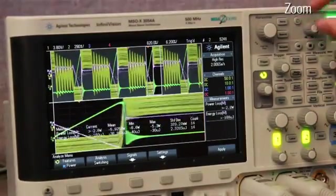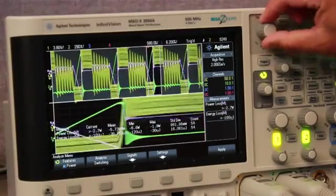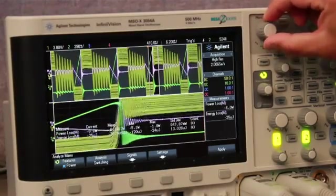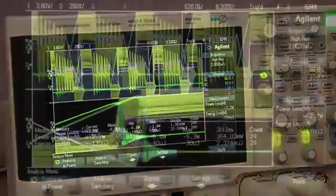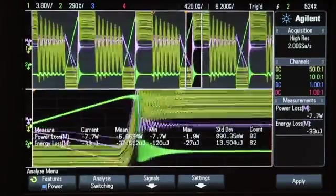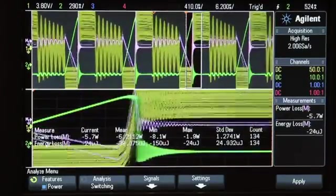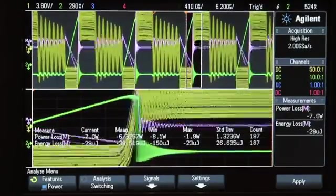Let's now turn on the zoom window and adjust the size and the position of the zoom-in window to encompass the turn-off transition in the Power Loss Trace. You can now pinpoint how much of the power is lost during the turn-off transition of the power transistor.